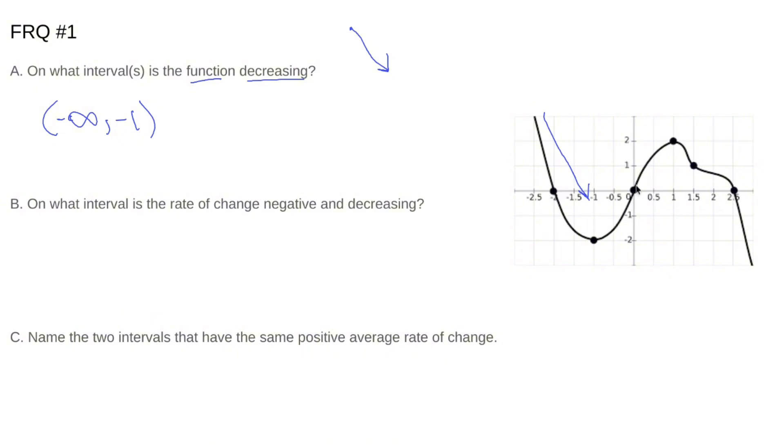From negative 1 to positive 1, we're increasing, and then from 1, we're going down and to the right again. And it's not consistent, but it doesn't have to be.